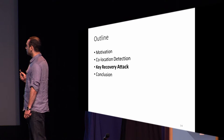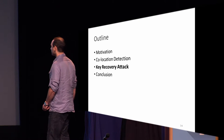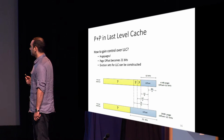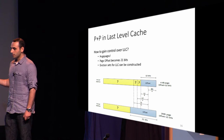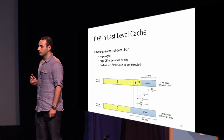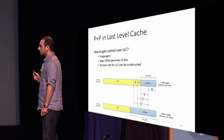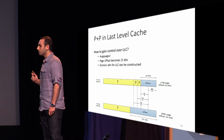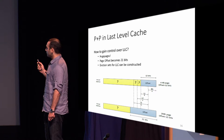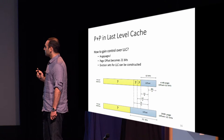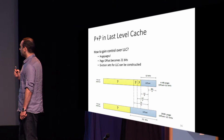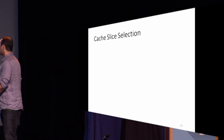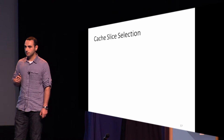Now let's look at the RSA key recovery attack in detail. We use Prime+Probe on the last-level cache, and to gain control over it we use huge pages. Huge pages are a CPU feature available on virtually all Intel CPUs and all the public clouds we worked with. They are 2-megabyte memory pages that reveal 21 bits of the address. Since this address is the page offset, it is not translated by the MMU — meaning those 21 bits remain constant as the address travels to the CPU and memory. Using this, we can create eviction sets.